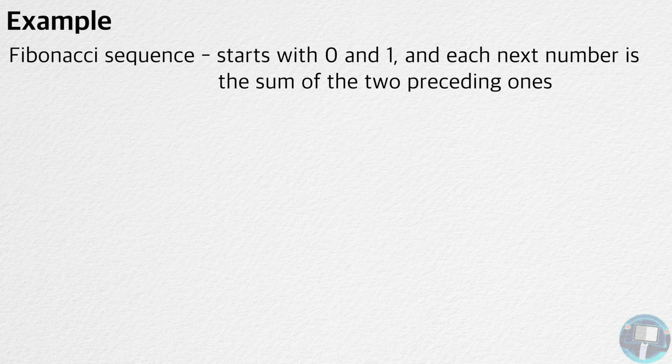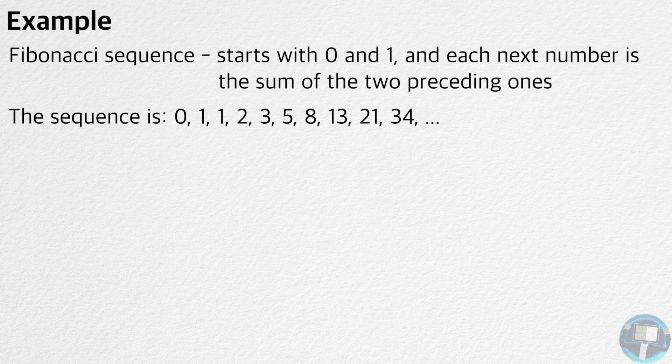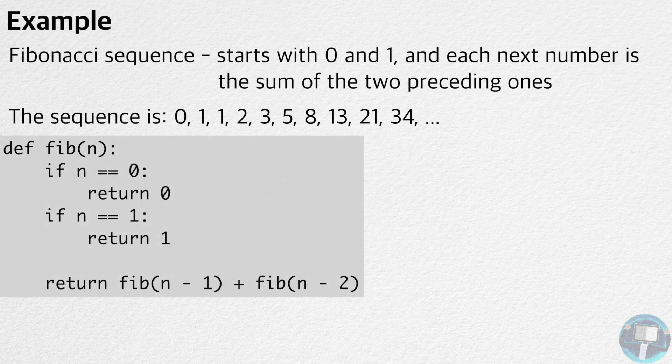Let's take a look at another example. Fibonacci sequence is a sequence that starts with 0 and 1, and each next number is the sum of the two preceding ones. The first 10 numbers in the sequence are as follows. Here is a function that returns the nth Fibonacci number.